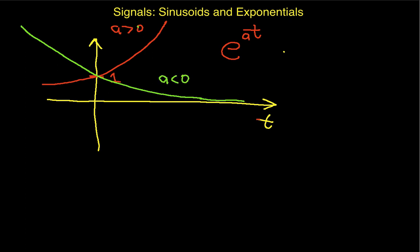Decaying exponentials are generally good, because they indicate that a system is going to be stable. Increasing exponentials are generally bad, because they indicate that a system is increasing exponentially.